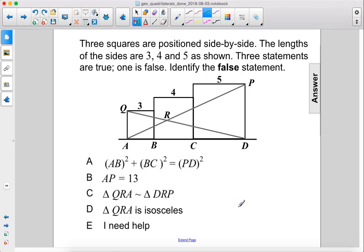Three squares are positioned side by side. The lengths of the sides are 3, 4, and 5 as shown. Three statements are true, one is false. Identify the false statement.